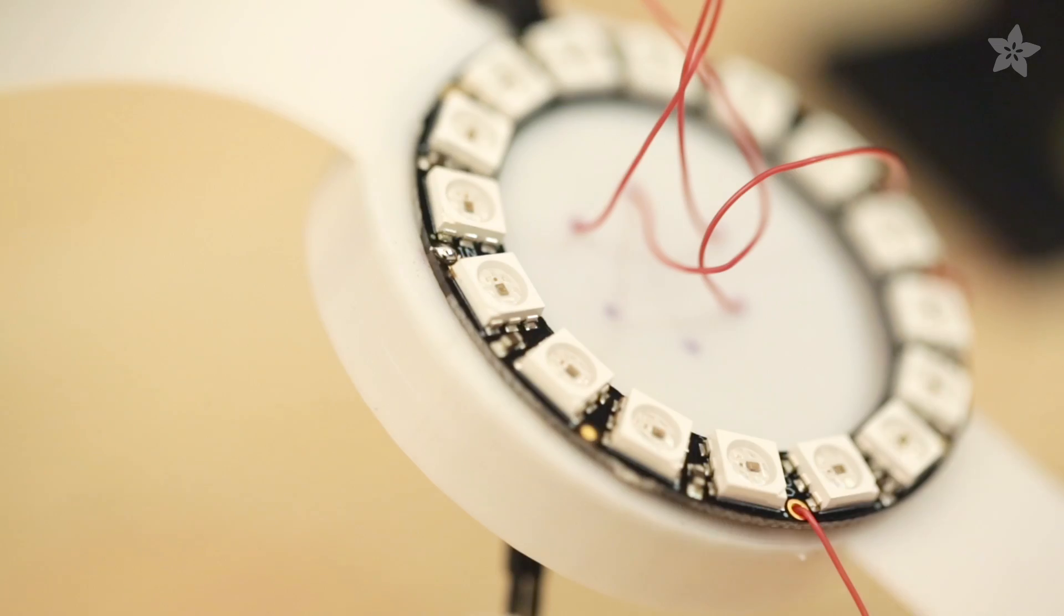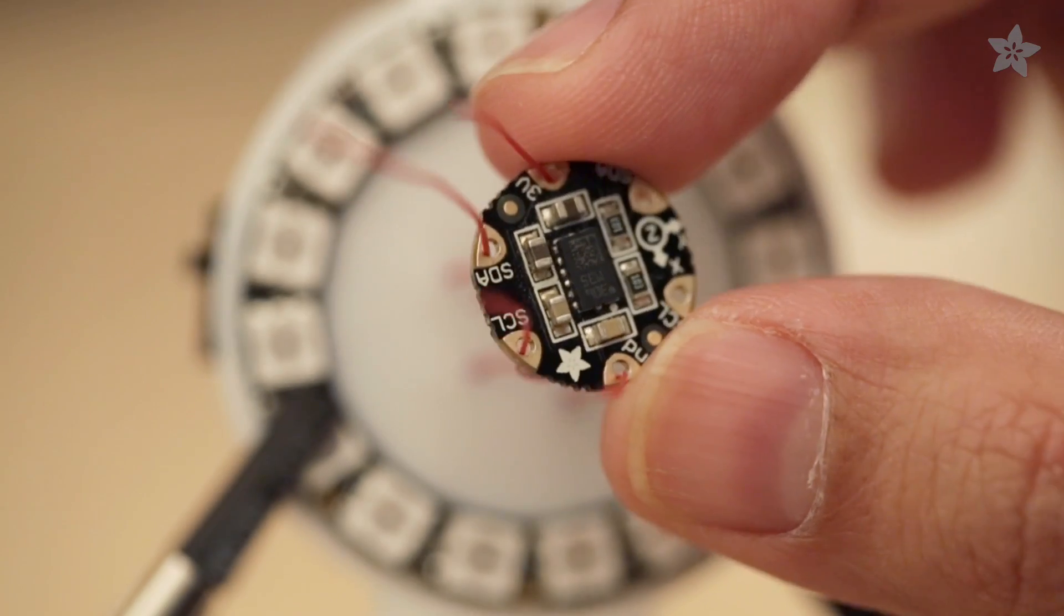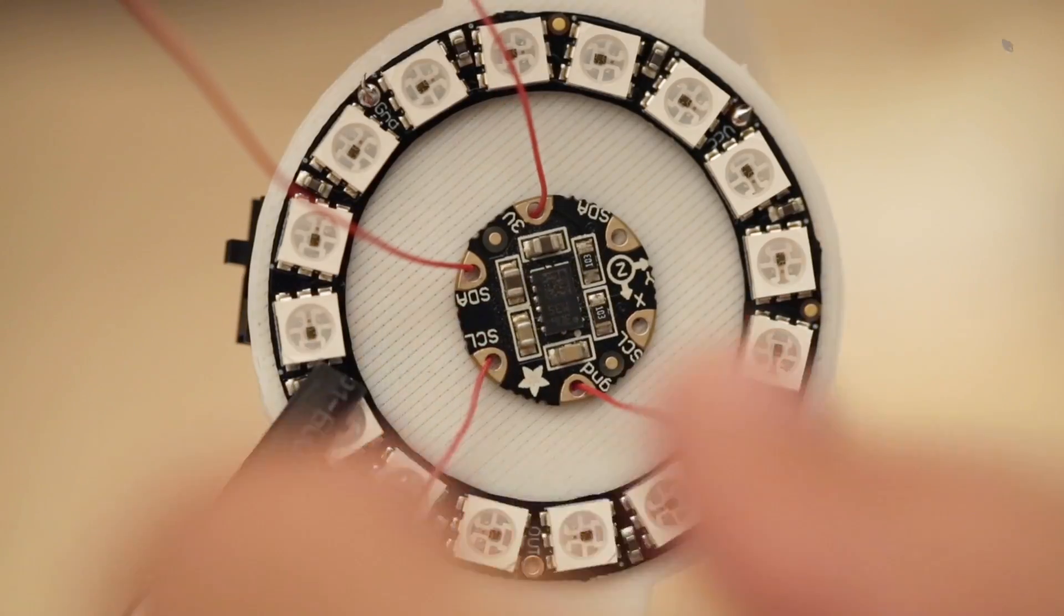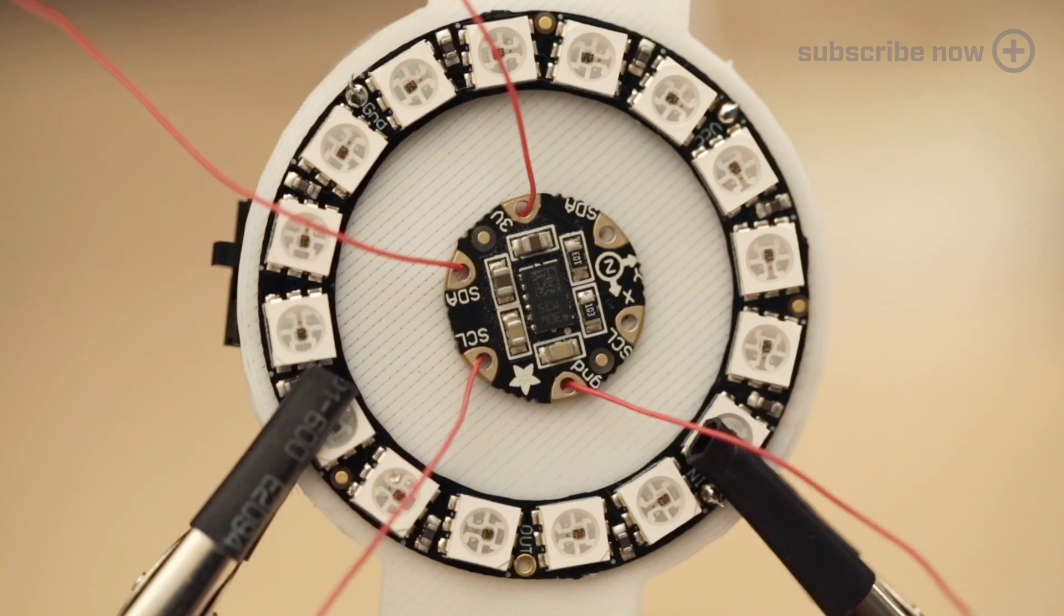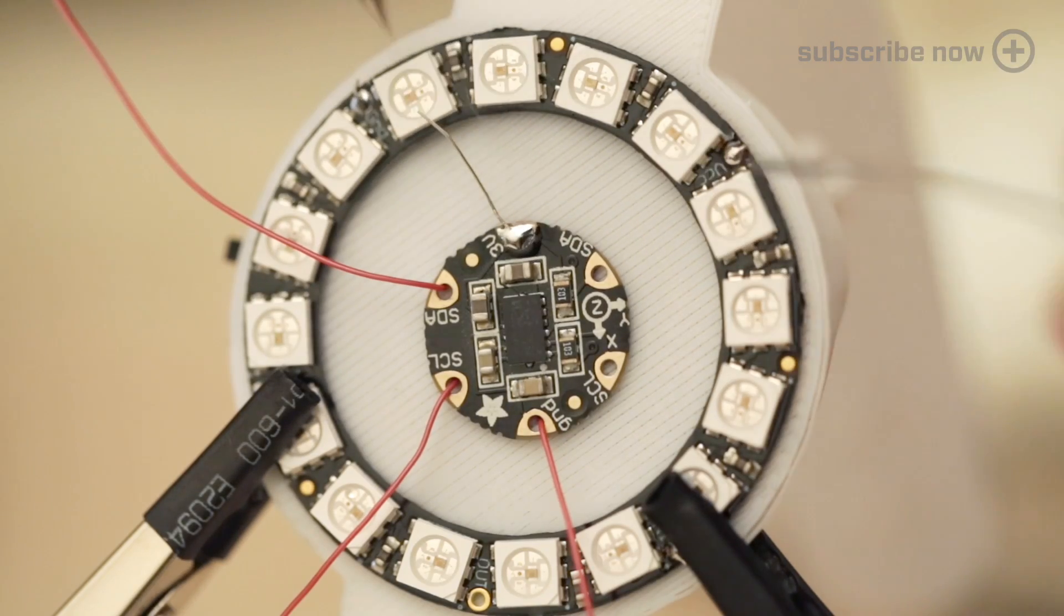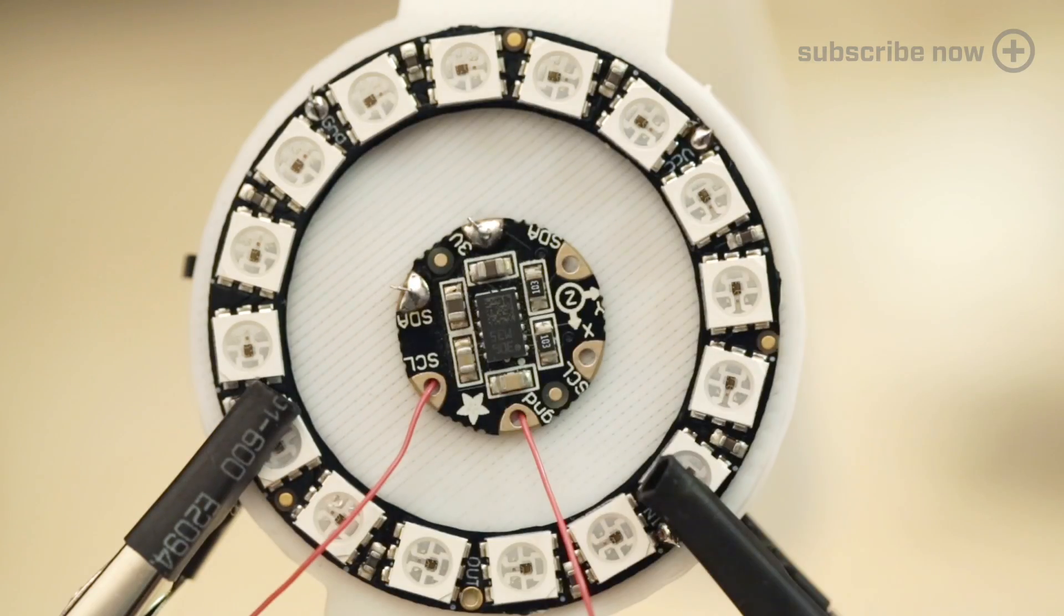Remove any excess wire from the NeoPixel ring, then thread on the accelerometer and bend back the wires to hold the circuit in the center of the ring. Strip, solder and remove the excess wire from the accelerometer.